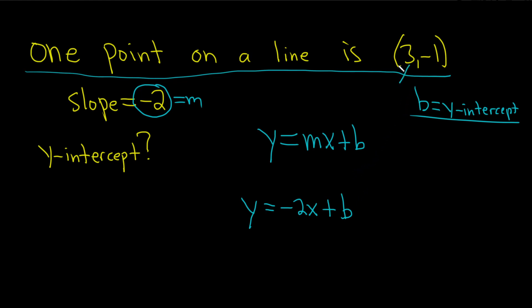So this will be our x, and this will be our y. So y is -1, and that's equal to -2 times x, which is 3, plus b, which is our y-intercept. So -1 is equal to -6 plus b.